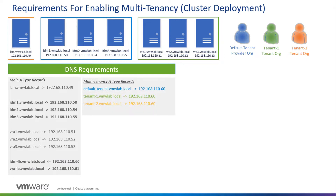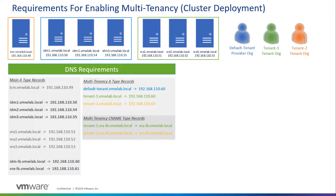The multi-tenancy-specific A-record types are the same as in single deployment, except the IP addresses point to the IDM load balancer IP address. All three — default-tenant, tenant-1, and tenant-2 — represent the hostnames used to access the VIDM instance for each tenant. On the VRA side, the CNAME records for tenant-1 and tenant-2 use the VRA load balancer namespace: tenant-1.vra-lb.vmwlab.local and tenant-2.vra-lb.vmwlab.local, both pointing to vra-lb.vmwlab.local.